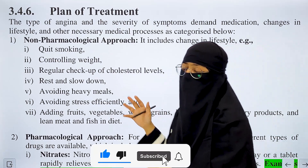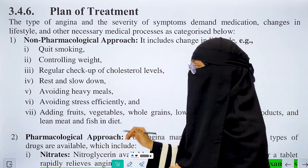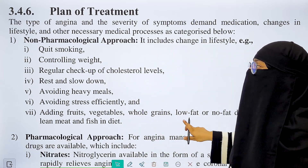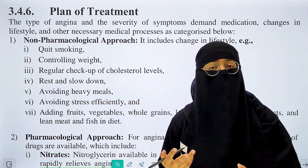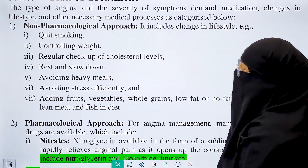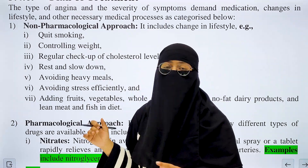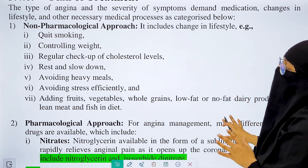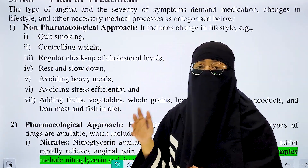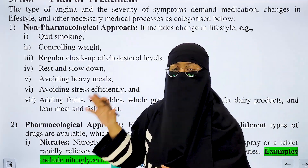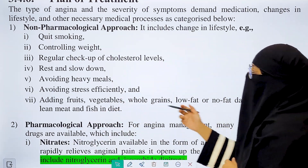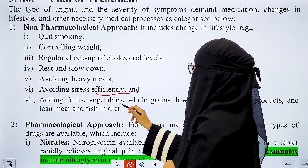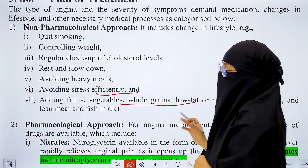The plan of treatment for angina pectoris has two main approaches. The first is the non-pharmacological approach, which involves lifestyle changes such as quitting smoking, controlling weight, monitoring cholesterol levels, getting plenty of rest, avoiding heavy meals, avoiding stress, and adding healthy fruits and vegetables to the diet.